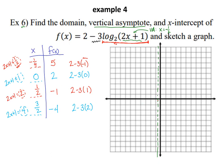Plotting those points: at x equals negative one-fourth, height five; at x equals zero, height two (that's our y-intercept); at x equals one-half, height negative one; at x equals three-halves, height negative four. We can see the graph racing off to the right and racing upward toward the vertical asymptote at x equals negative one-half. If we needed more points, we could choose more powers of two for the argument.